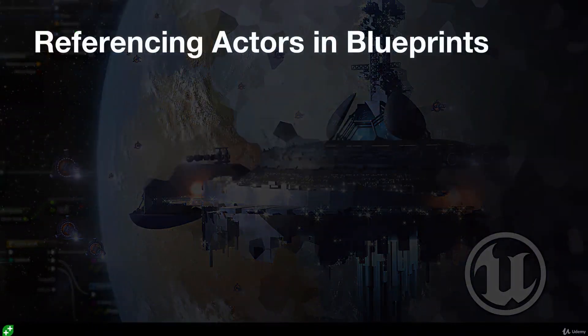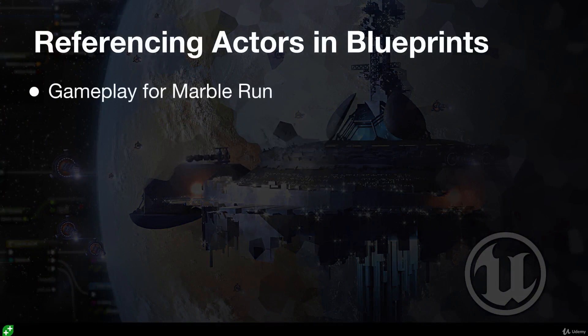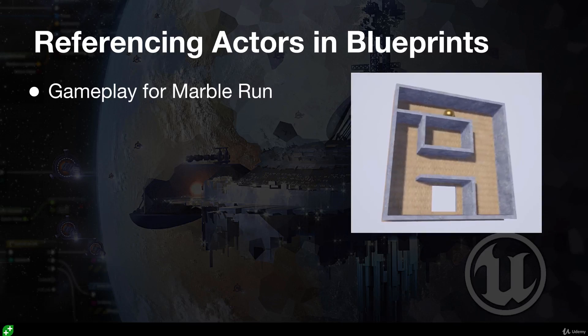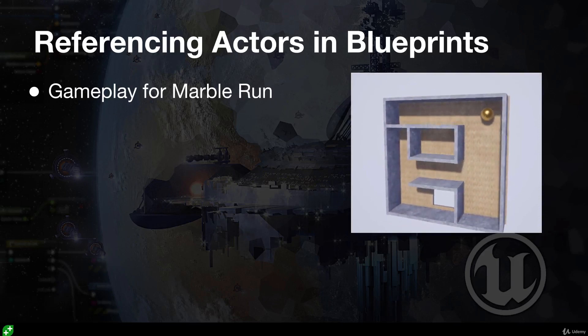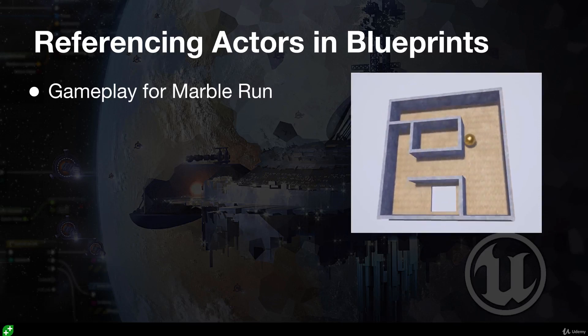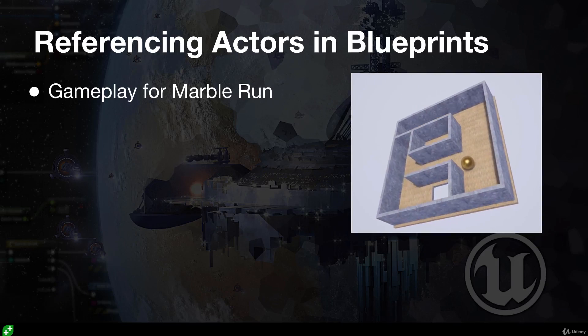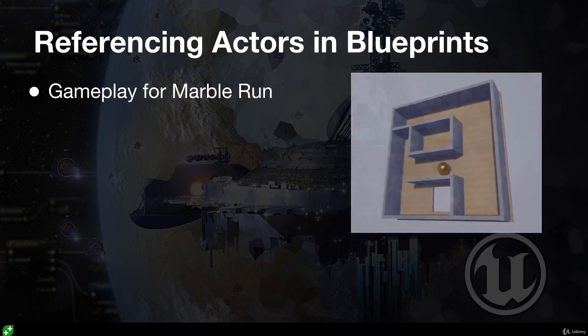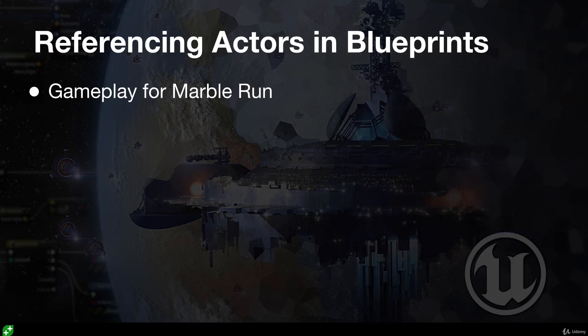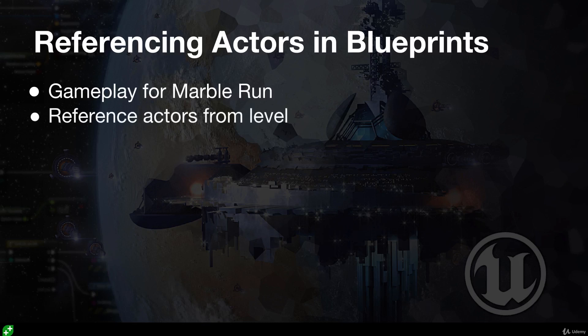This lesson is about referencing actors in blueprints. We're going to be making progress with the gameplay for Marble Run. The idea for this game is that we have a maze and a ball, and the objective is to make the ball escape the maze by tilting it in different directions. We'll look at how to reference actors in blueprints from our level and how we can affect those actors at runtime with player input action events.